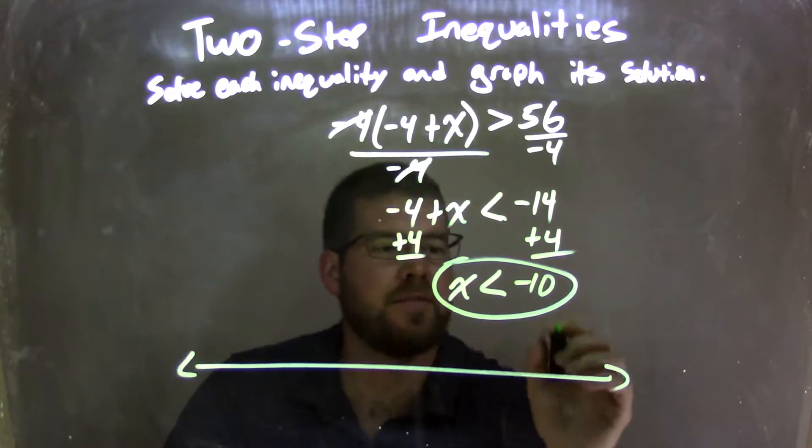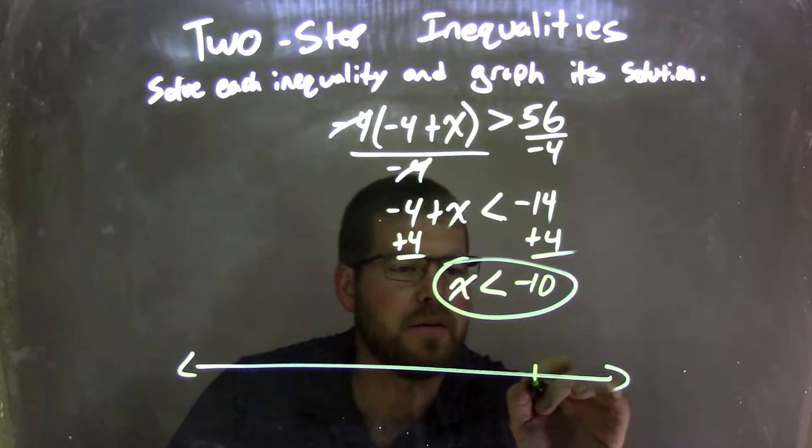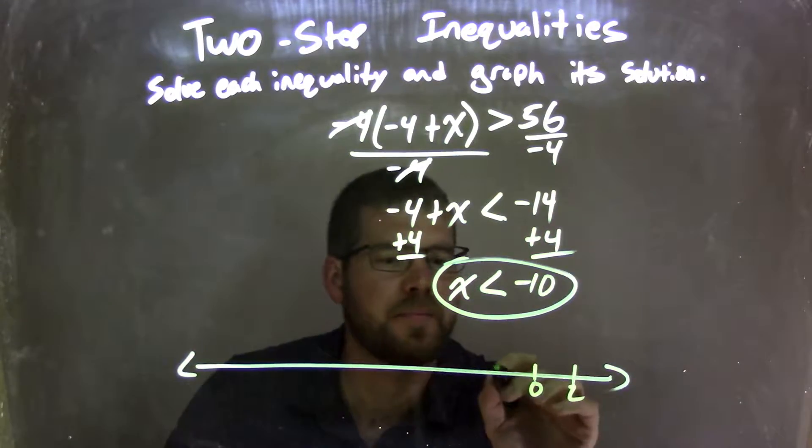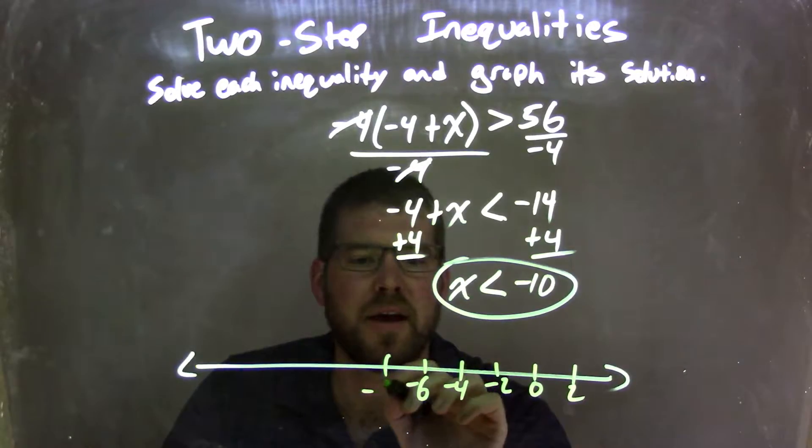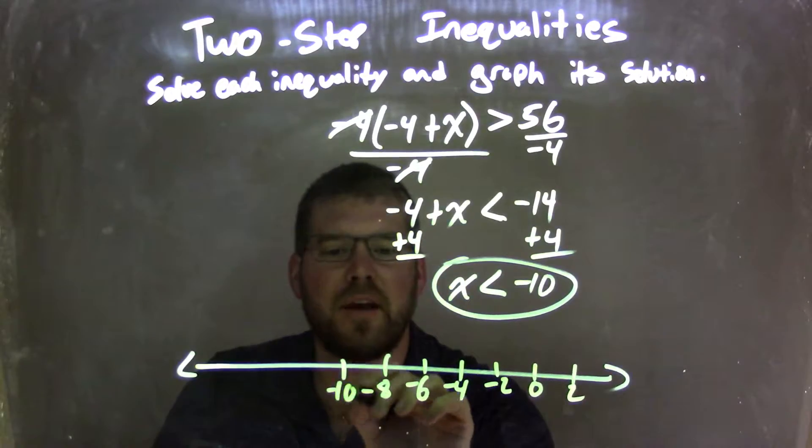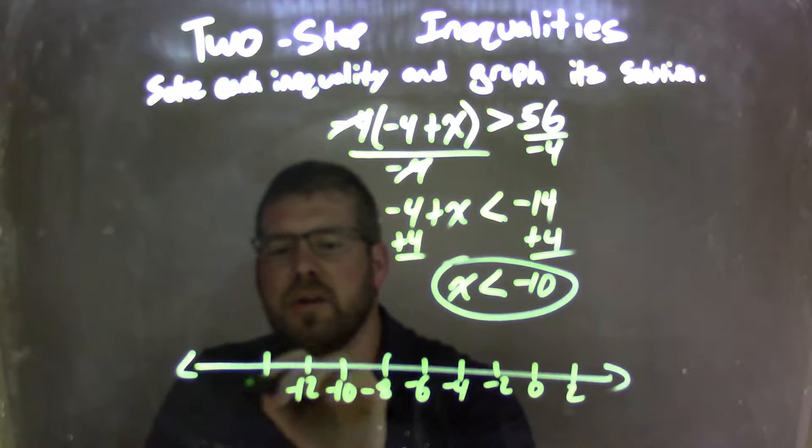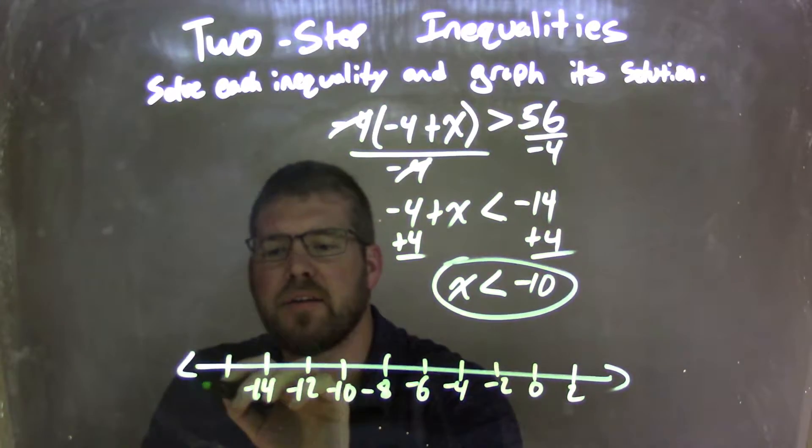So x is less than negative 10, so let's put a 0 here, 2, negative 2, negative 4, let's go back by 2s here, negative 6, negative 8, negative 10, negative 12, negative 14, and negative 16.